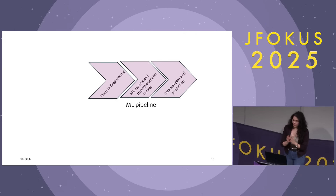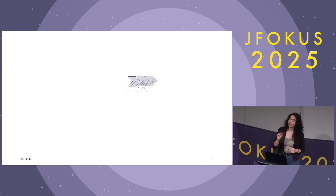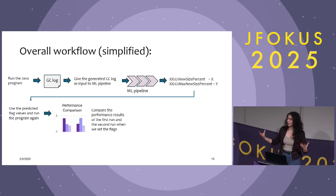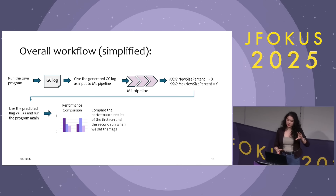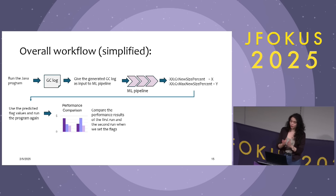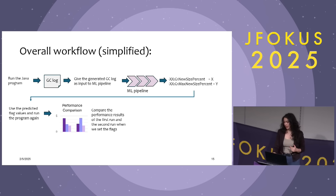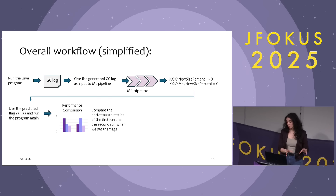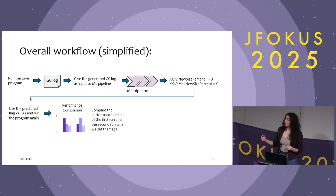Now let's see the place of this pipeline in our overall workflow diagram to make the bigger picture more clear. Here is a simplified version of it. On the left we have our Java program. We run it once to generate the GC log. Then we feed that GC log to our machine learning pipeline, which gives us the suggested flag values for the flags we selected. And eventually, we are comparing the performance of the run where we use the predicted values against the default run where we did not use those flags.